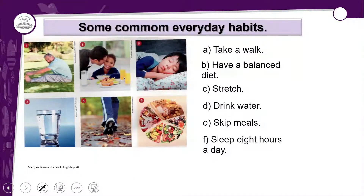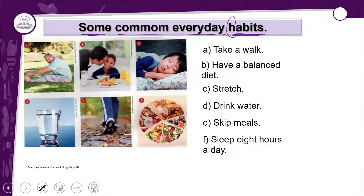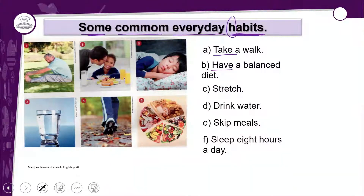Vamos seguir. Temos agora 'some common everyday habits' — alguns hábitos comuns do nosso dia a dia. Temos seis imagens correspondentes às letras A, B, C, D, E, F. Você vai tentar relacionar a imagem às palavras. Lembrando que a primeira palavra que aparecer sempre é verbo, porque estamos vendo imperativo. Imperativo começa com verbo.